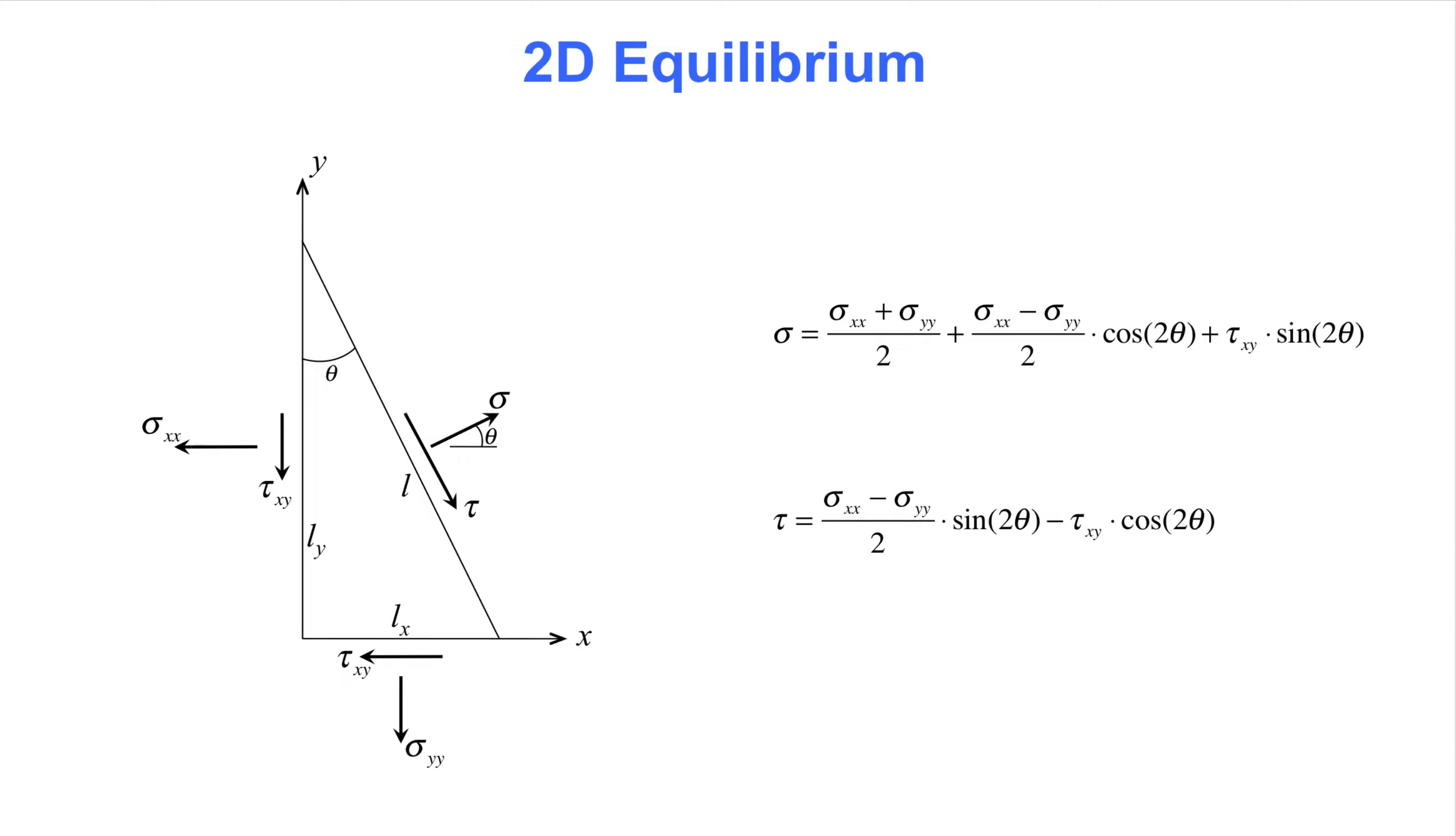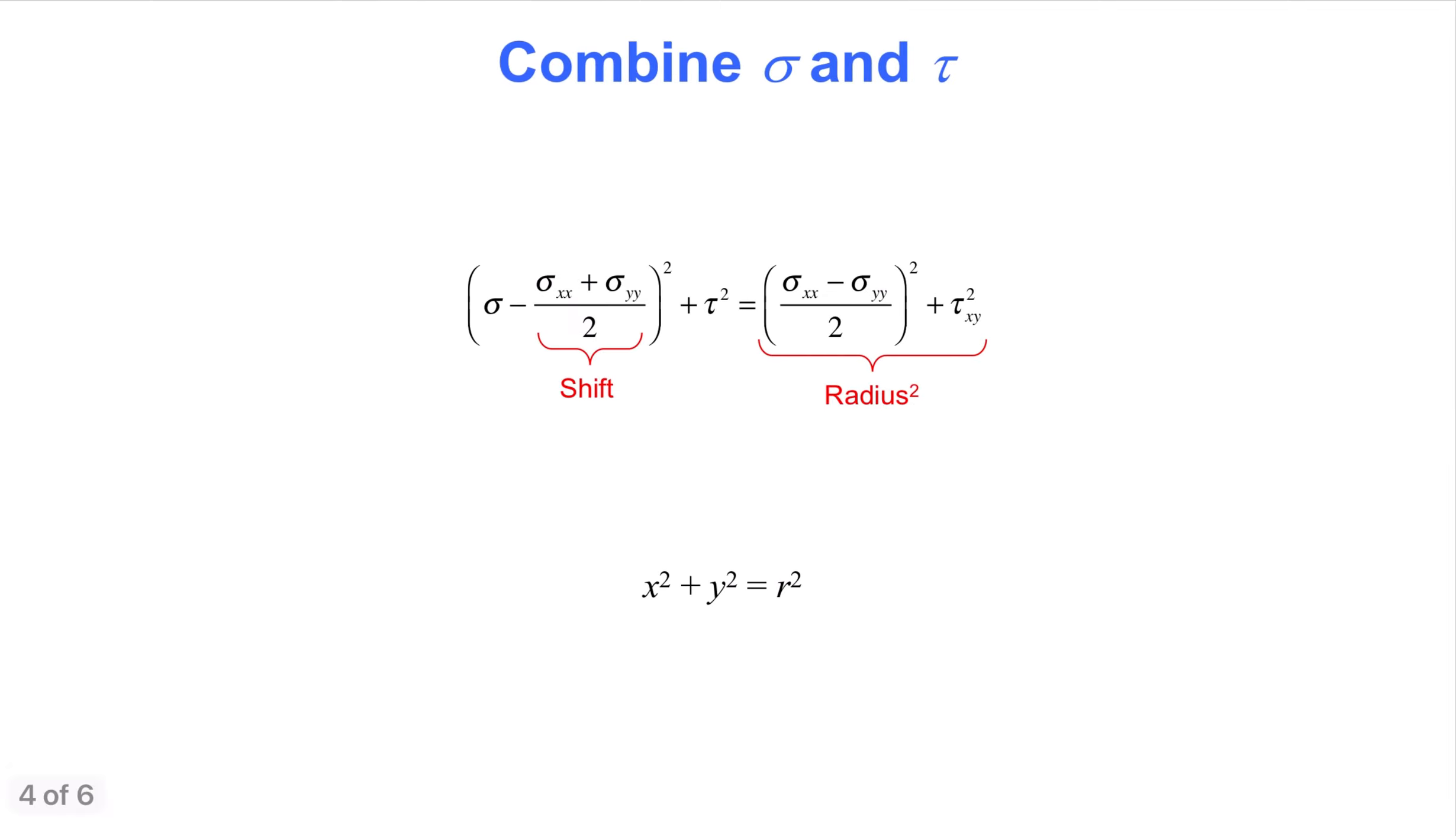While these equations can be directly employed for two-dimensional stress states, we will now follow Christian Otto Mohr and develop a graphical approach that is known as Mohr's circle. On this slide, the two equations on the previous slide are combined, leading to this result.